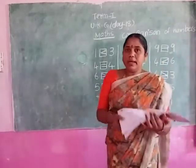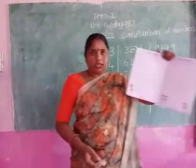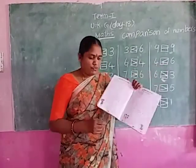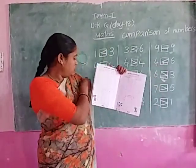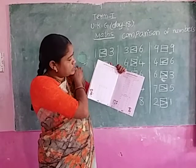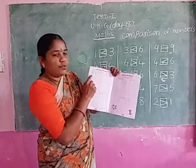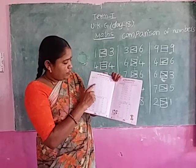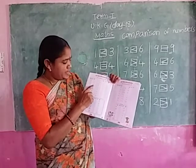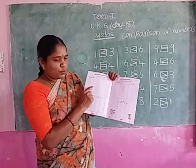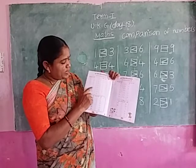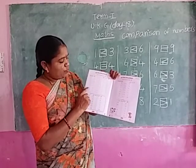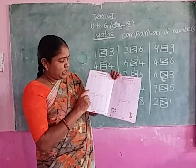Now, before numbers, after numbers, between numbers. Before 5 is 4. Before 15 is 14. Before 18 is 17. Before 2 is 1. Before 10 is 9. Before 16 is 15. Before 20 is 19.